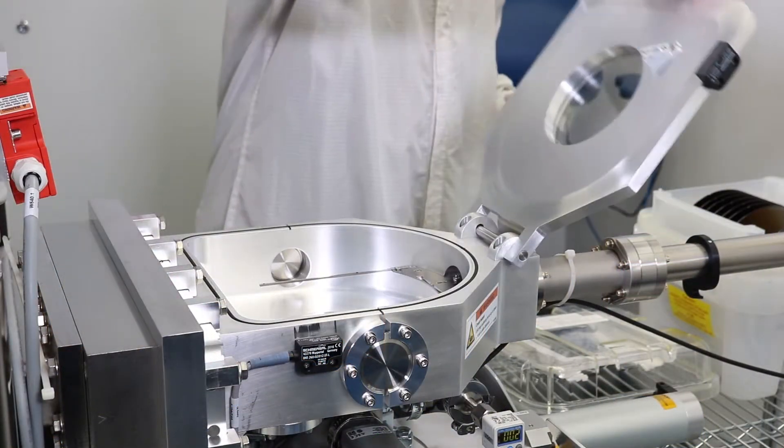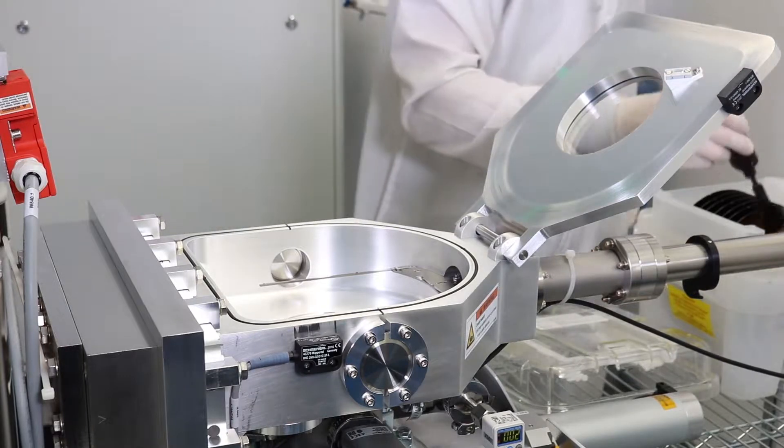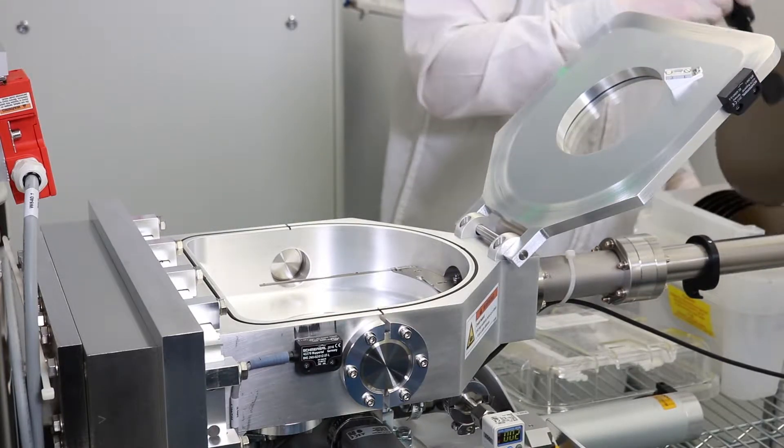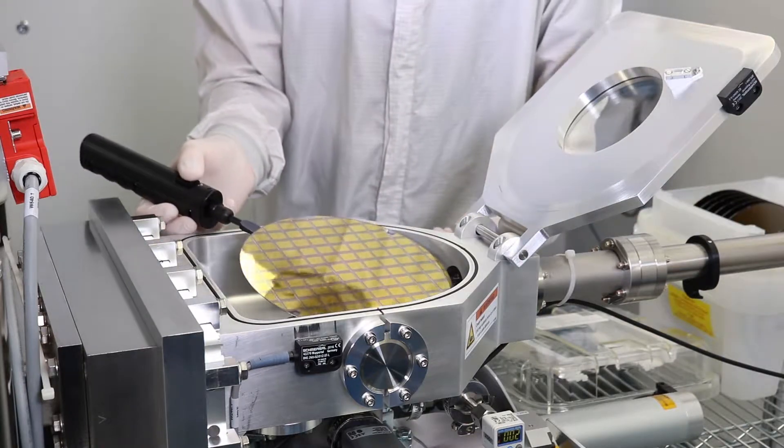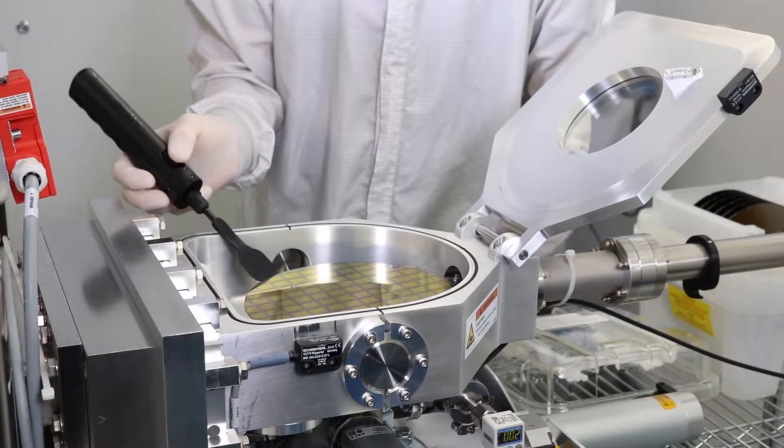In microbolometer fabrication, a key material is vanadium oxide. Its high temperature coefficient of resistivity at around 3% per Kelvin makes it an ideal material to sense small temperature variations.